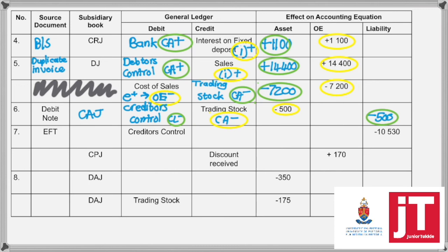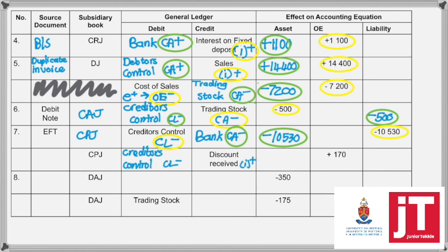Transaction number seven: an EFT, creditors control, and the liability is minusing — that must indicate a payment. CPJ: creditors control is a current liability minusing. Bank is the current asset also decreasing because I'm paying money. The 10,530 minusing links to the liabilities, so I need to write in the 10,530 for the bank transaction. On the same transaction, CPJ discount received — on this payment we received a discount. Creditors control must minus again and discount received is an income. Under equity it links to the discount received, and I have to enter the minus 170 rand for the liability that minuses.